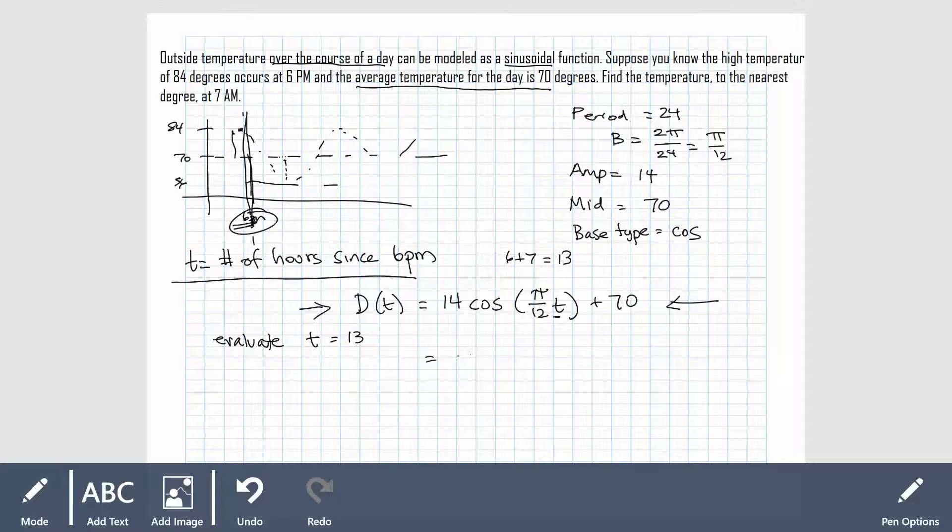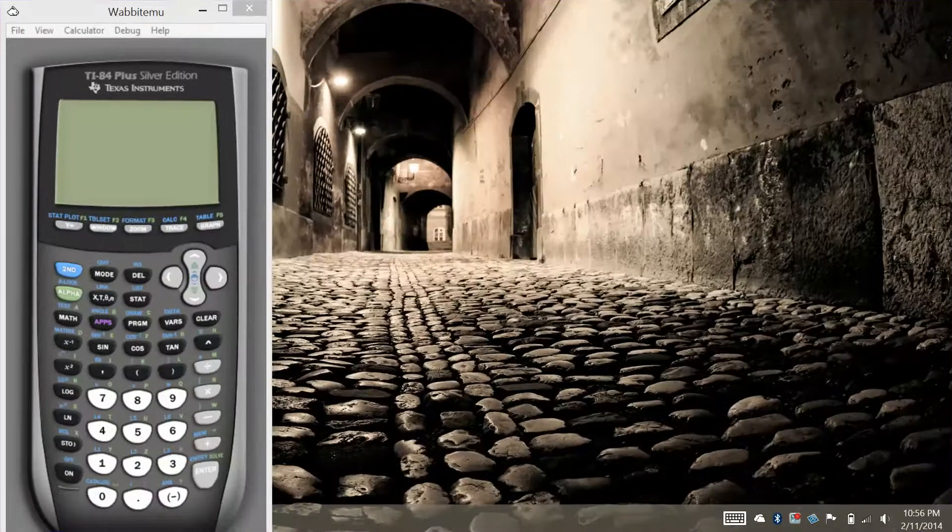To solve the equation, what I want to do is find what is 14 times the cosine of π over 12 times 13, plus 70. There's no variables in here, we just need to go into our calculator and evaluate this equation. Keep in mind that everything is created here based on using radians, so make sure your calculator is in radians mode when you go in. But we essentially just want to type this in exactly the way we see it. 14 cosine of π over 12 times 13 plus 70.